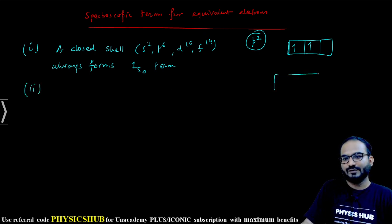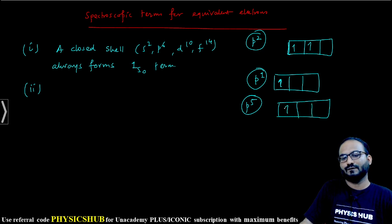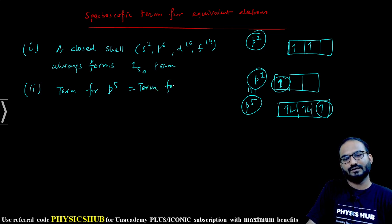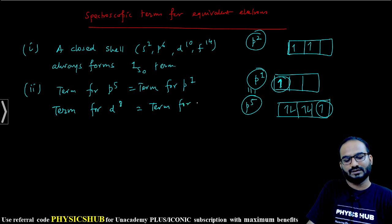If you consider the term of P¹, then one electron is there. Let's say we consider term of P⁵: 1, 2, 3, 4, 5. These two are equivalent. Here only one electron, and the others are forming pairs. So term for P⁵ will be equal to term for P¹. In a similar manner, term for D⁸ will be equal to term for D² and so on.